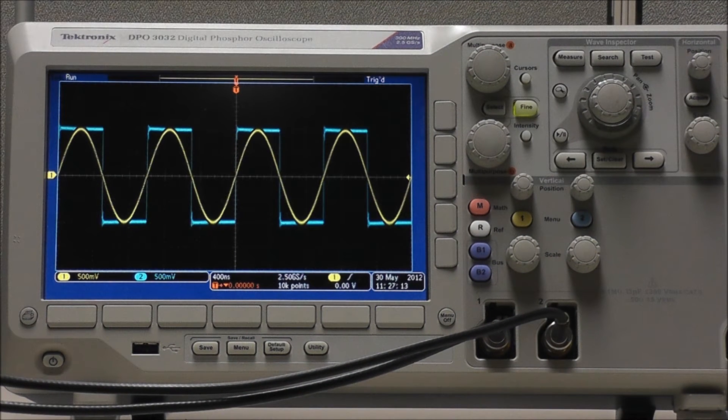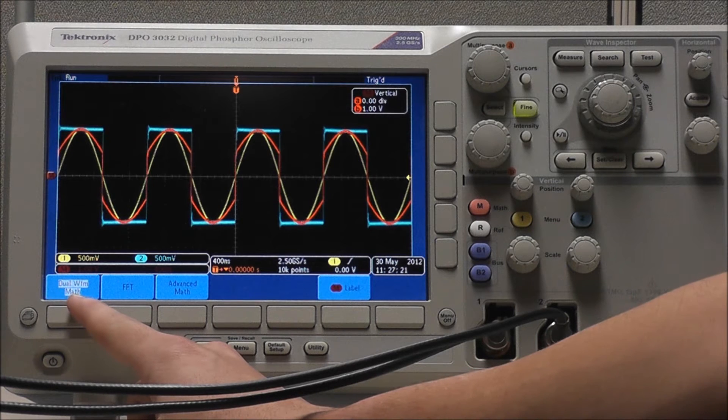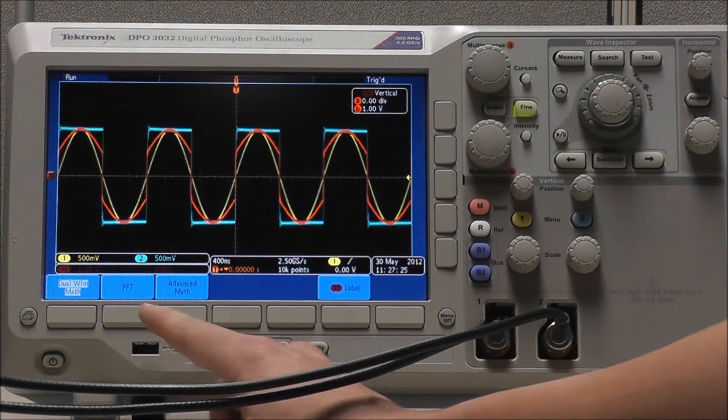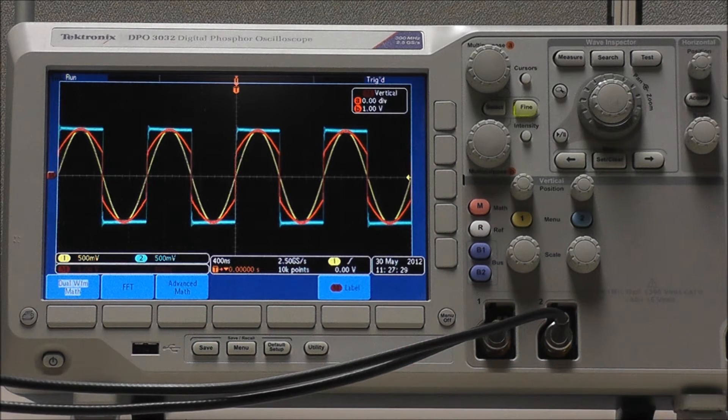So I'm using a signal generator to produce two waveforms, and these are just waveforms of arbitrary function and value. If I select math, you can see that I'm given a menu with dual waveform monitor math, fast Fourier transform, advanced math, and math label, as well as a new math waveform.